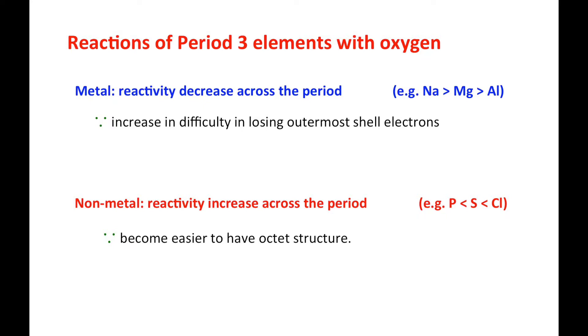For the non-metal part, it's opposite. Chlorine only needs to receive one electron to form octet structure, compared with phosphorus which needs to receive three. So chlorine will be more reactive because they can achieve the octet structure easier.